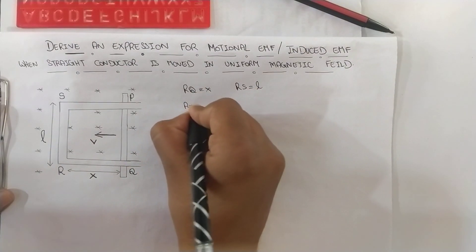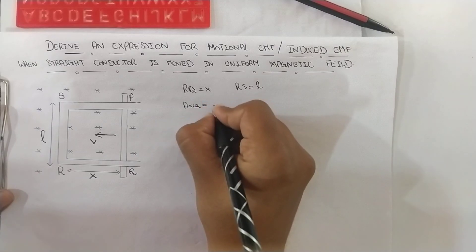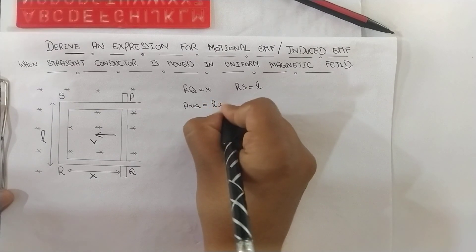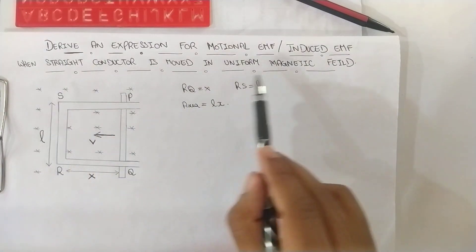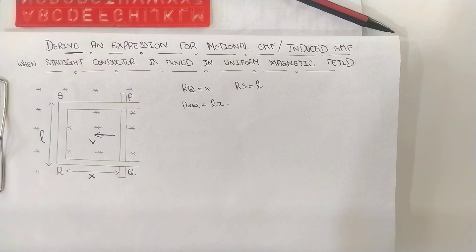Then what is the area? Area of rectangle is L into X in our case. This star represents the uniform magnetic field for our derivation.